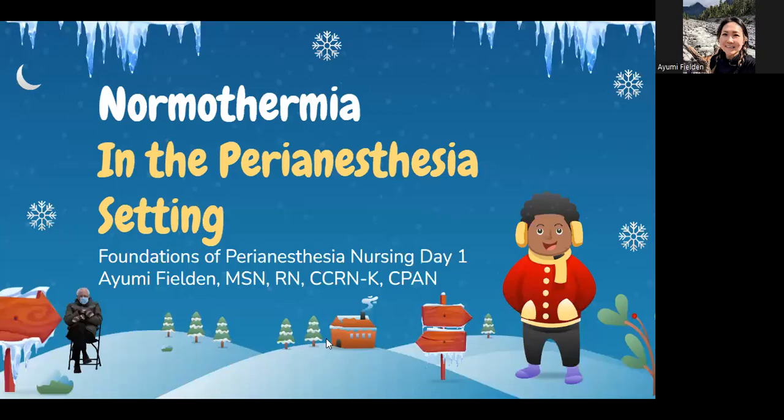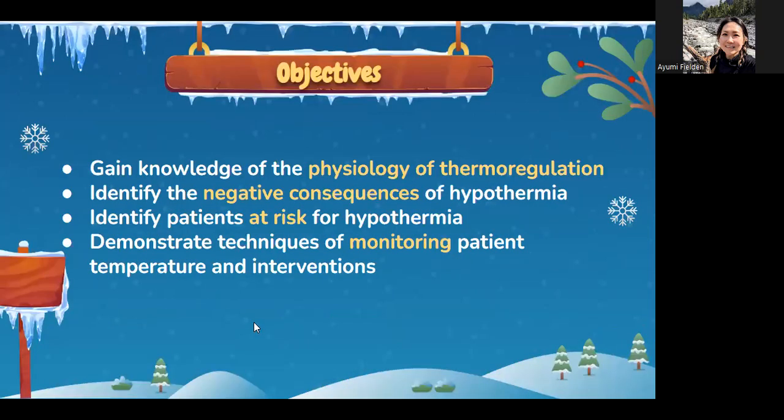Now we're going to talk about normalthermia in the peri-anesthesia setting. Here are the objectives: we're going to gain knowledge of the physiology of thermoregulation, identify the negative consequences of hypothermia, identify patients at risk for hypothermia, and demonstrate techniques of monitoring patient temperature and interventions.